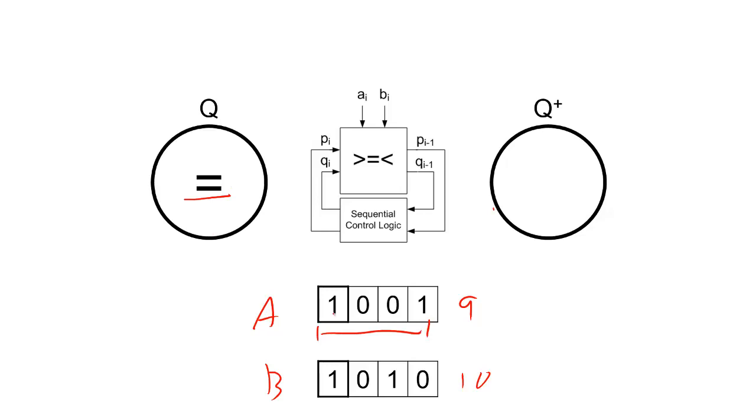Then what we're going to do is our bit serial design, or bit slice, is going to assume A is equal to B, and then it's going to compare the most significant bits of A and B to make a decision. Do we now know that A is greater than, equal to, or less than B?